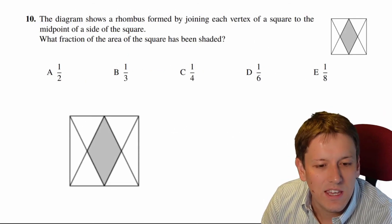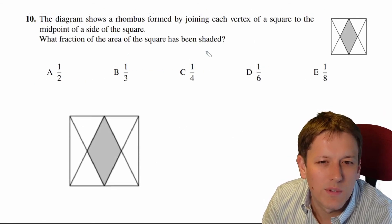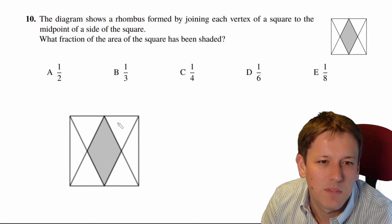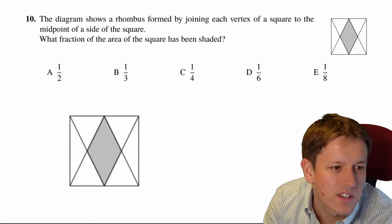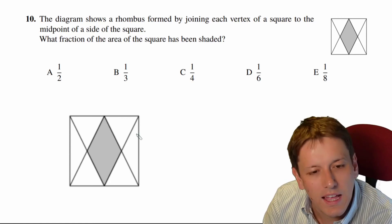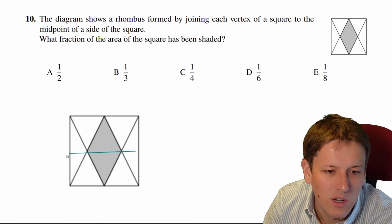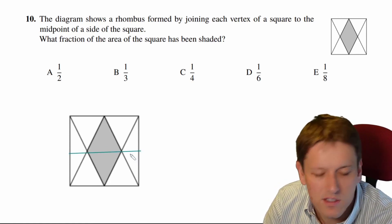Okay, so again I've just got a bigger copy of the picture here. It says we've got a rhombus formed by joining each vertex of a square to the midpoint of a side of the square. Basically everything is just as in this picture, and the way I'm going to do this problem is just to put a few extra lines on here.